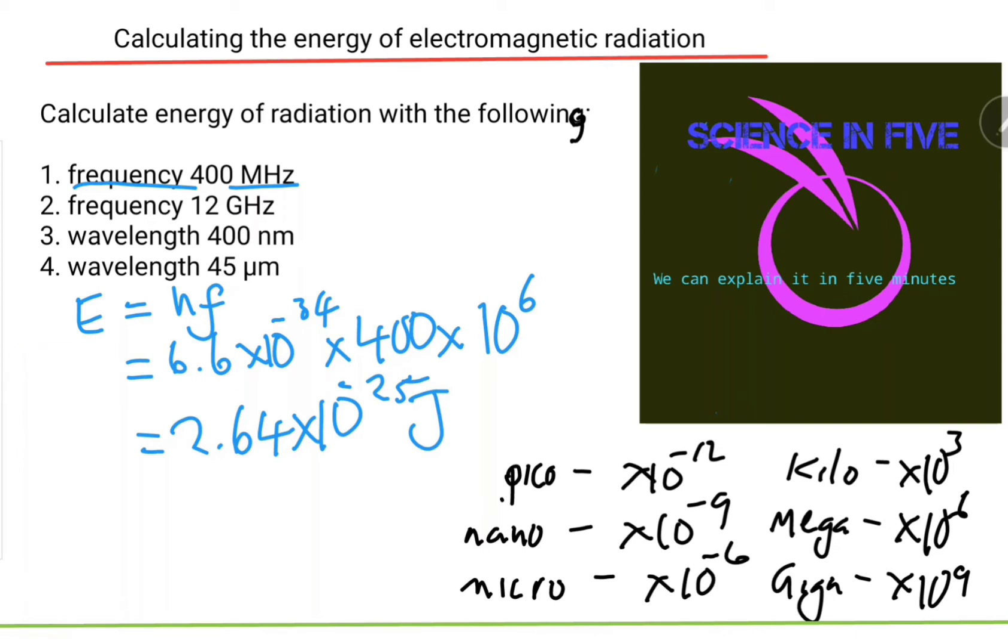Number two. This problem is the same - the only difference is the frequency value, but it's the same approach. The frequency is given as 12 gigahertz. E equals hf: 6.6 times 10 to the minus 34 times 12 giga, which means times 10 to the power of 9. This becomes 7.92 times 10 to the power of minus 24 joules.